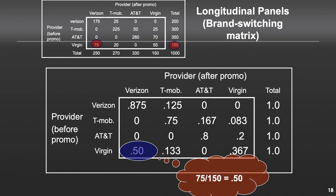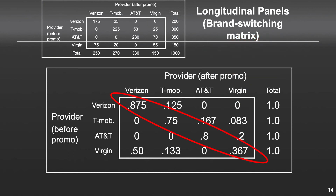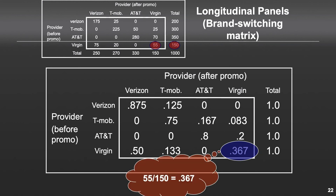So 50% of those customers switched to Verizon. And as another example, 0 divided by 200 equals 0 — meaning none of those customers switched to Verizon. The diagonals represent loyalty percentages. For Verizon, we have 36.7%, coming from 55 divided by 150.